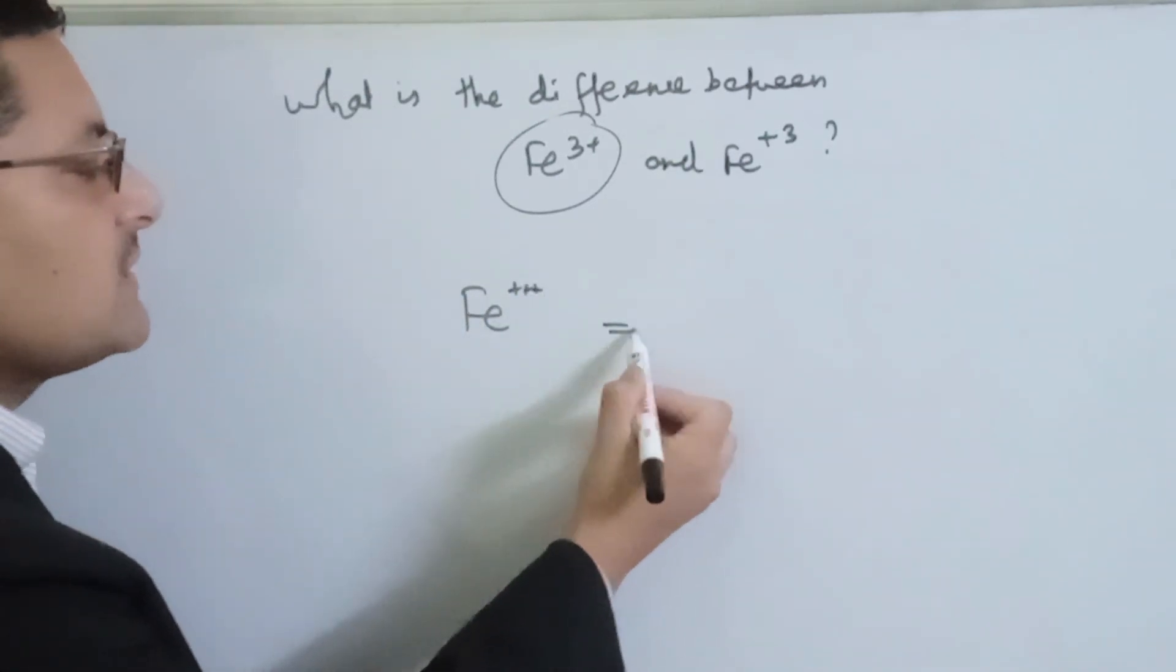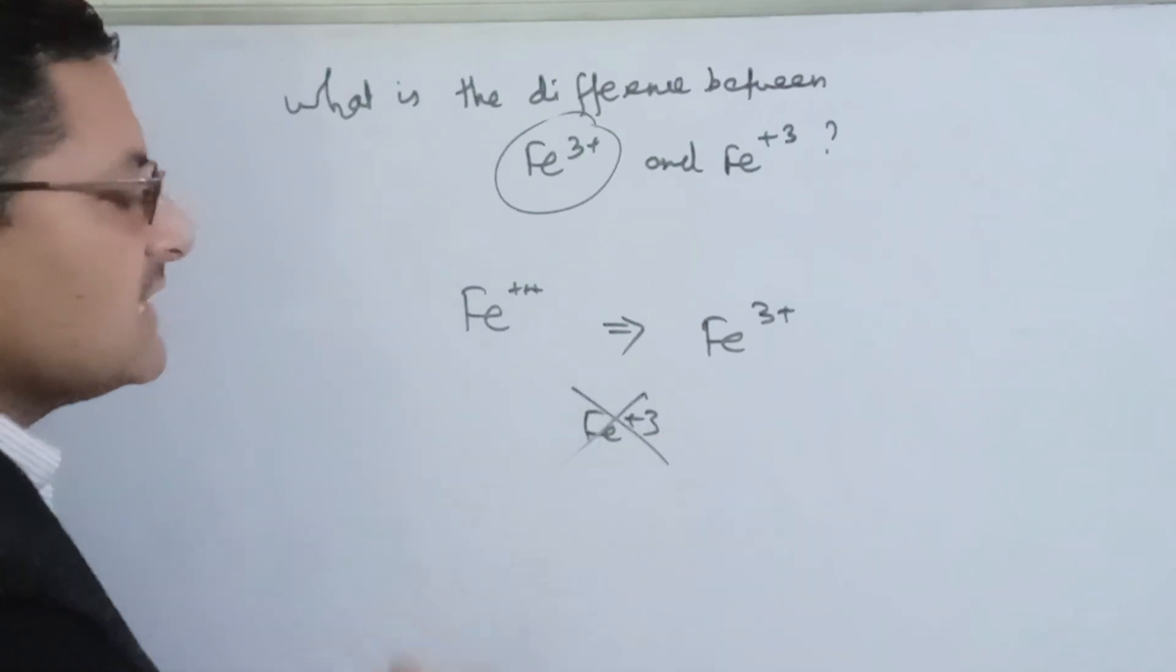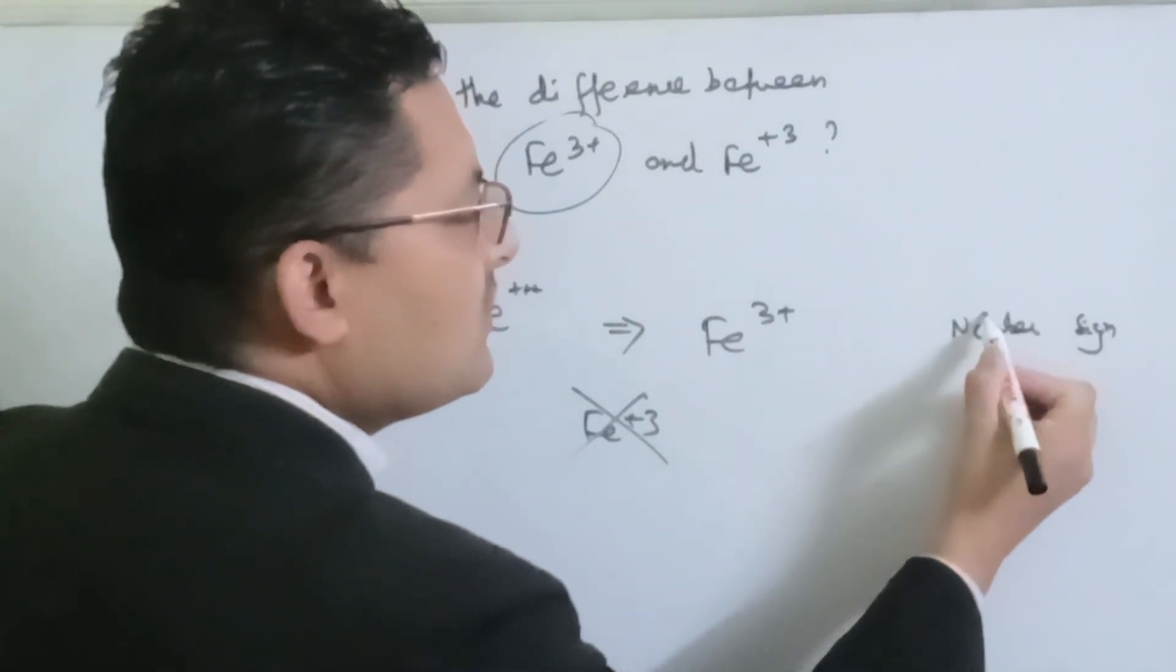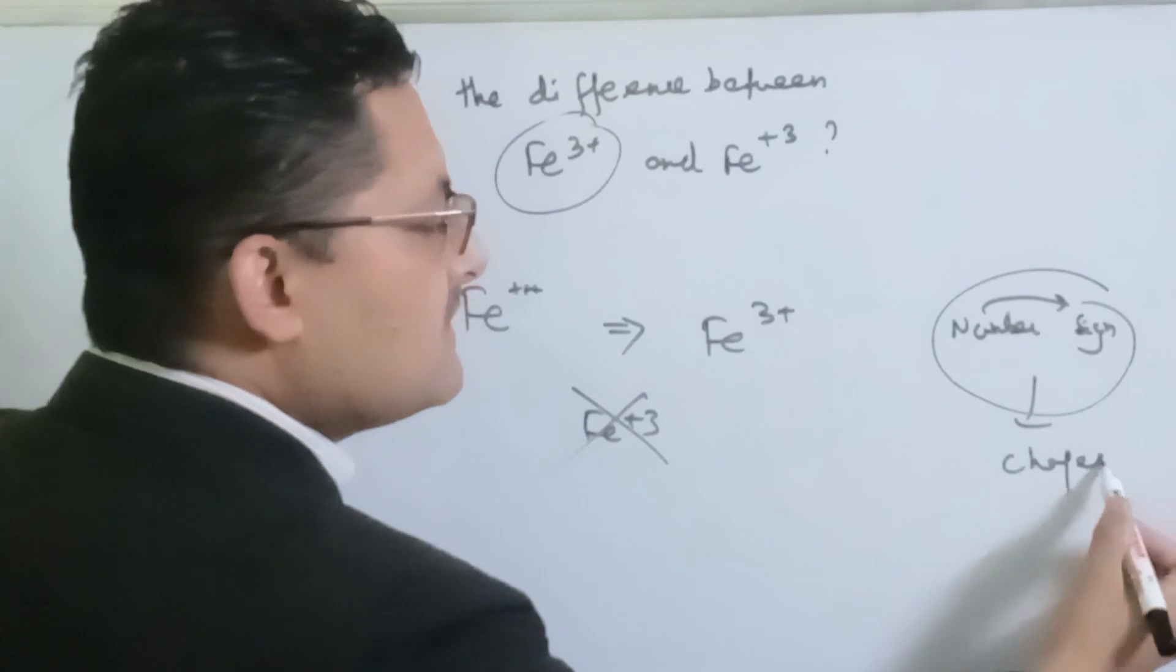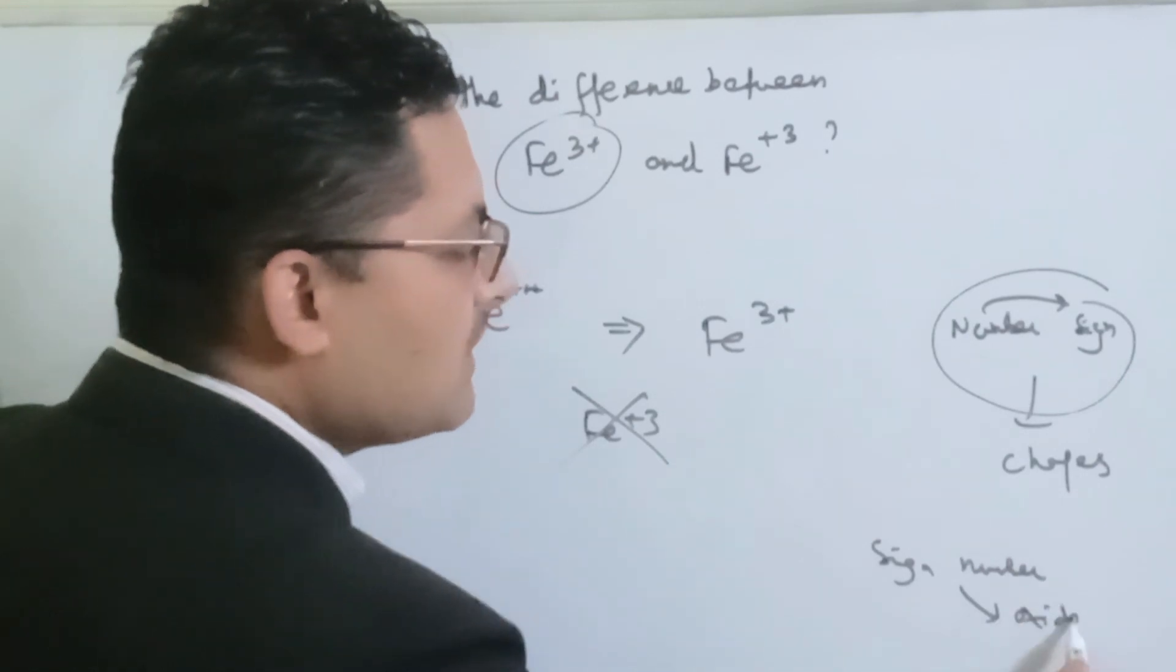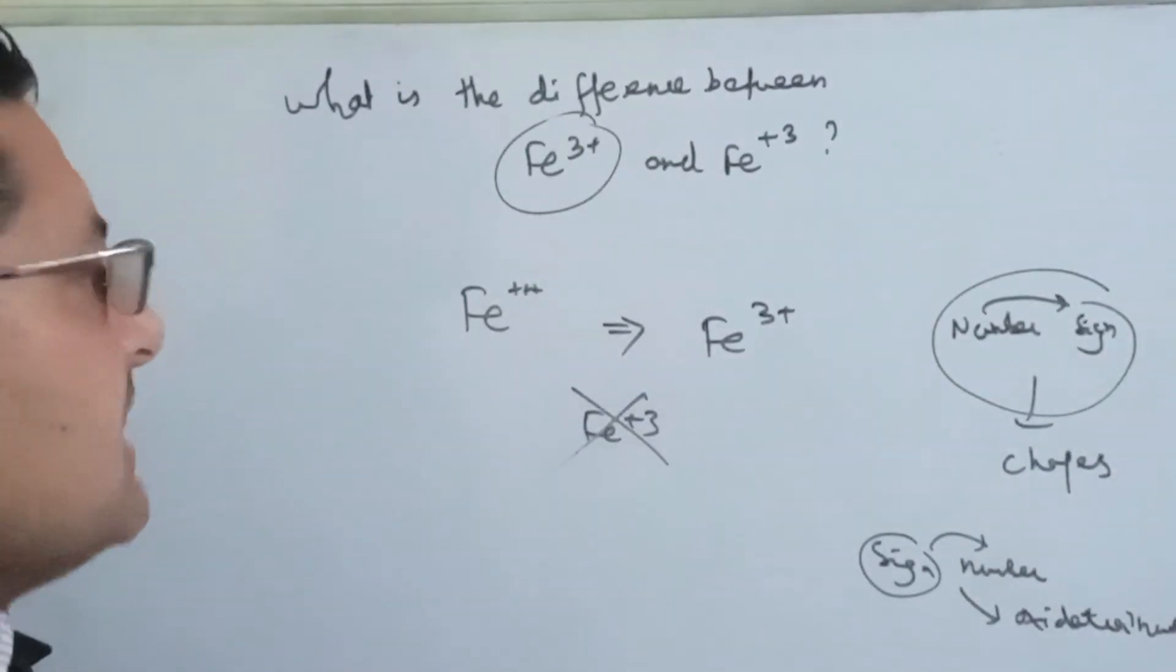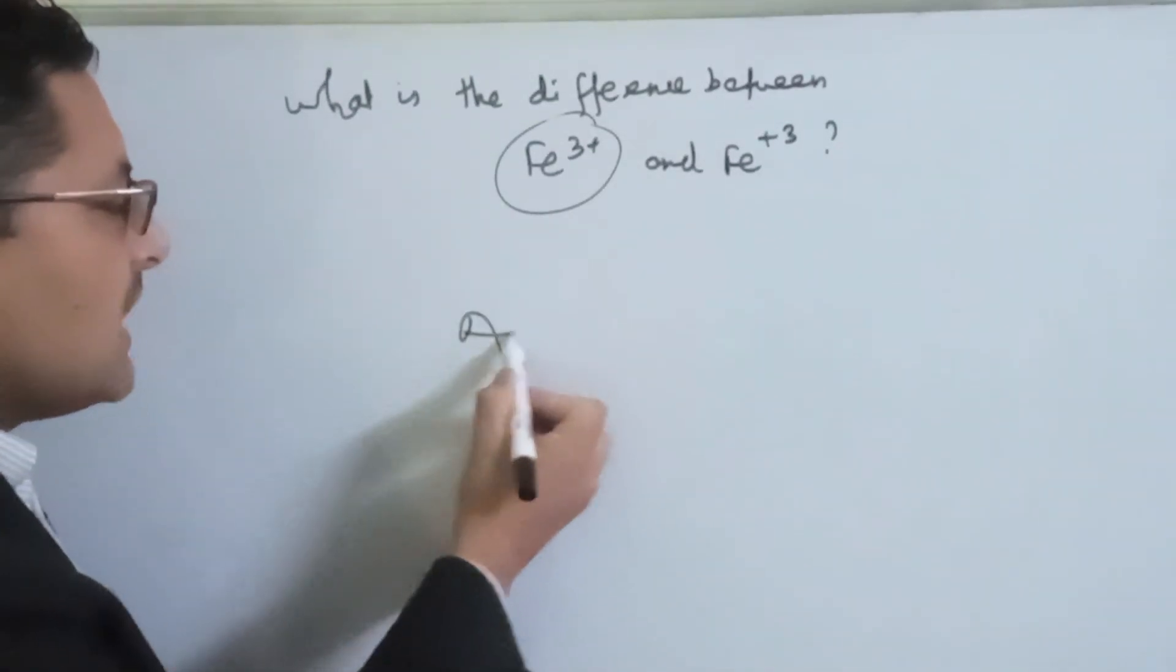If we write Fe²⁺ or Fe³⁺, it will be correct to indicate the charge - the number then the sign indicates charge. But if we put the sign first then the number, it indicates the oxidation number.